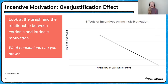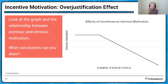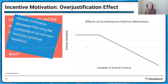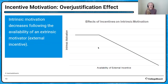Once I keep getting extrinsic motivation — money — to make those cookies, when my kids say 'can you make cookies?', I don't enjoy it anymore. That extrinsic reward overtook my intrinsic motivation. That's called the overjustification effect — defined as when intrinsic motivation decreases following the availability of an extrinsic motivator.